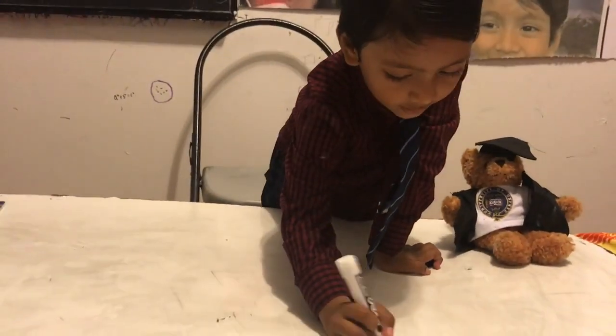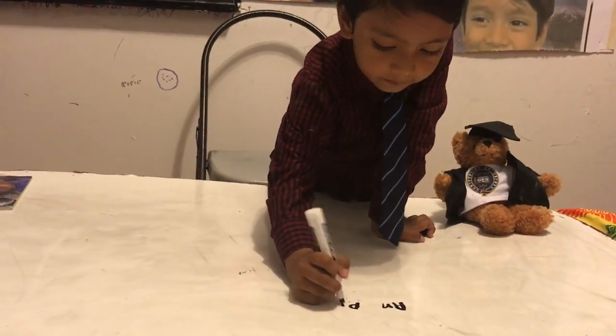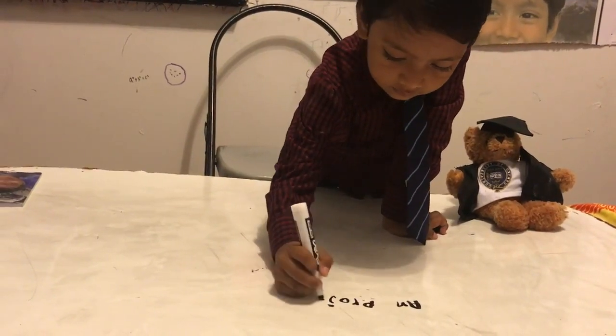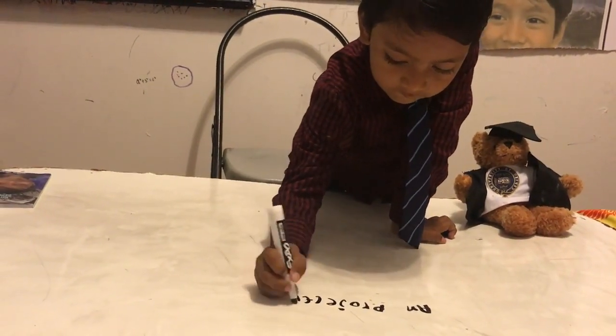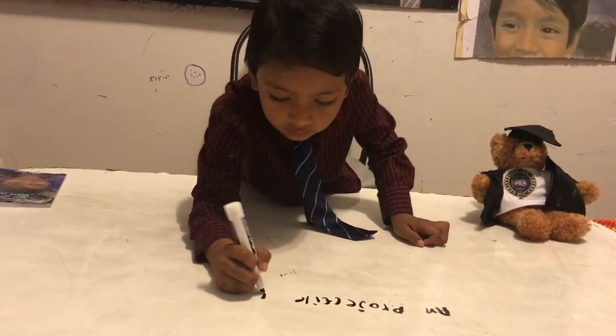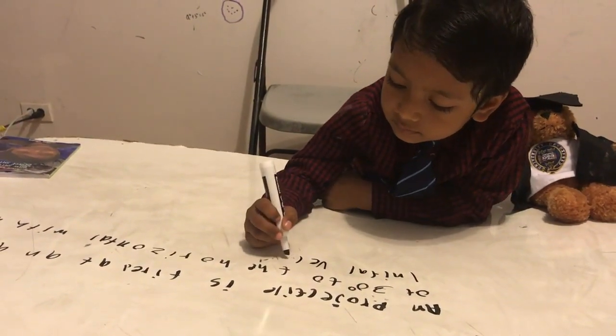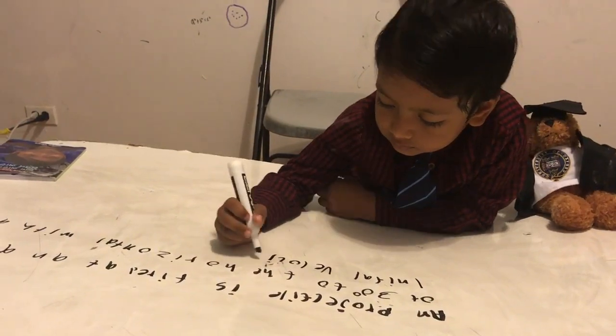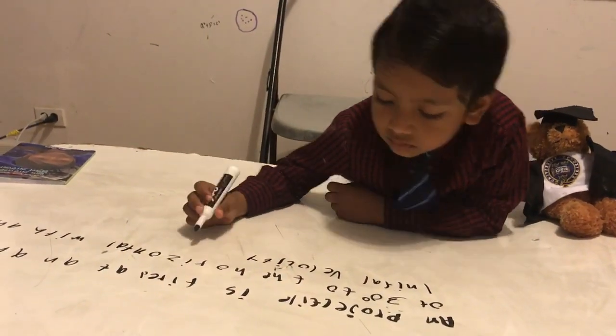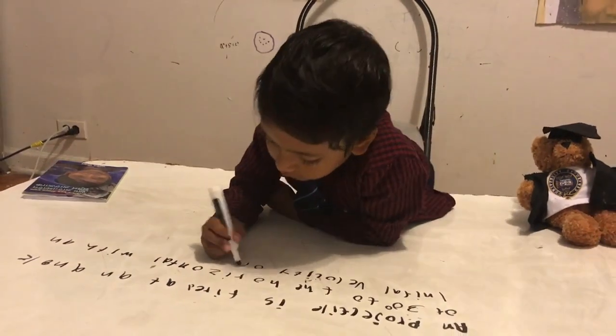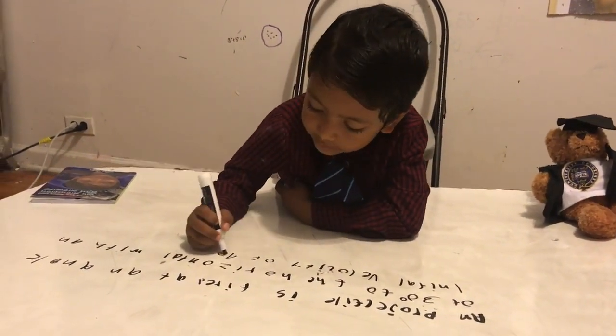Today I'm going to teach you in Physics Lecture number five. A projectile is fired with a velocity of 100 meters per second.